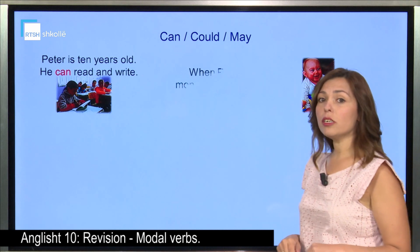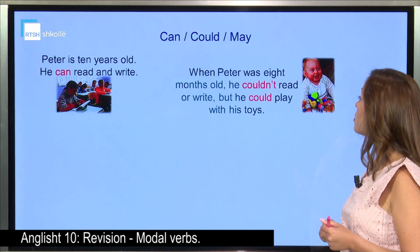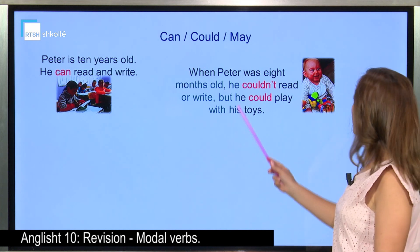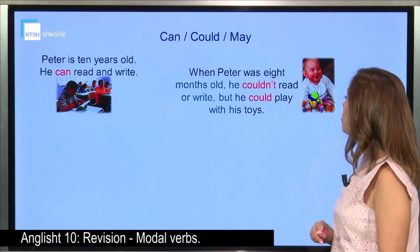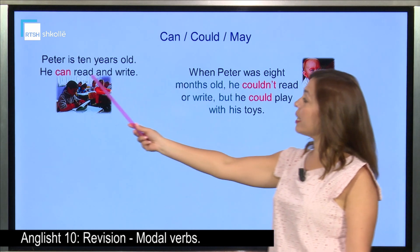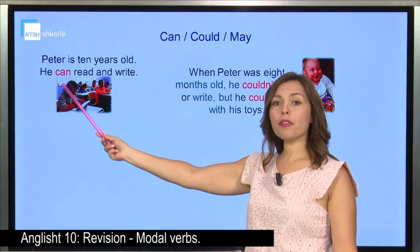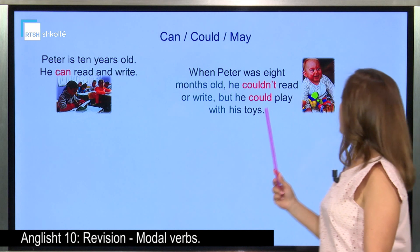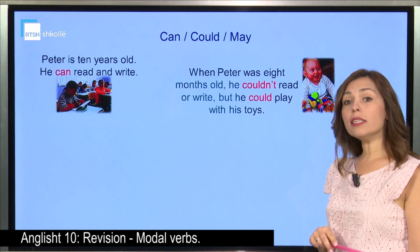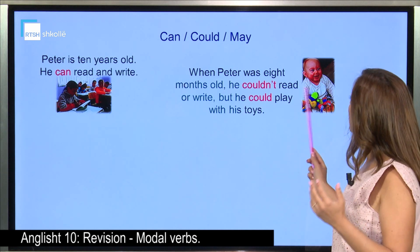But Peter, when he was a baby — when he was eight months old — he couldn't read or write. But he could play with his toys. So, he can read and write: 'can' shows ability in the present. He could play with his toys: ability in the past, when he was eight months old.